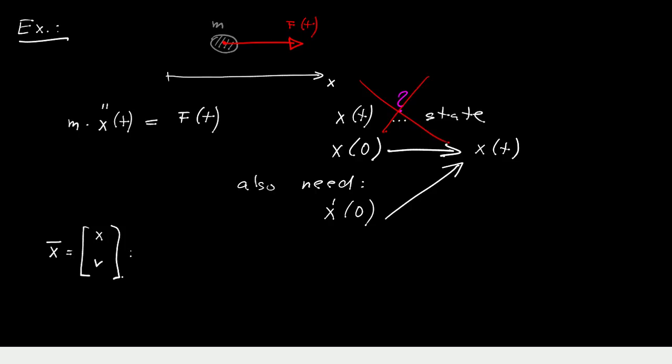So with this new state vector I can define a state model like this: x dot and v dot, which together form x bar dot, is equal to the matrix [0, 1; 0, 0] times [x; v], which is x bar, plus [0; 1 over m] times F.